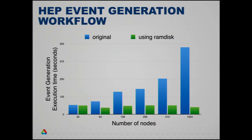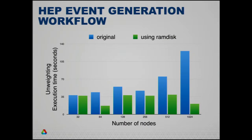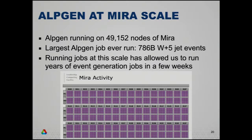Looking at scaling for the event generation phase up to 1,000 nodes: you can see the modified code that uses the RAM disk — this is weak scaling where each rank generates a number of events — does much better than we did previously. Similarly for the unweighting phase. This allows us to scale to all of Mira. We took ALPGEN from running as a single instance on a single node and ran it in parallel on Mira.